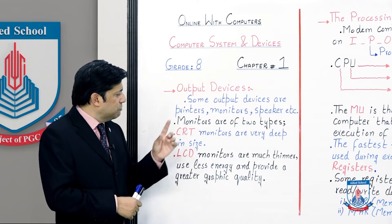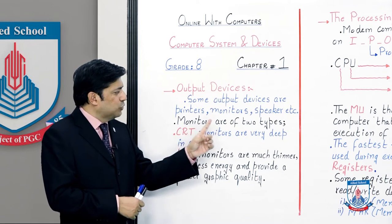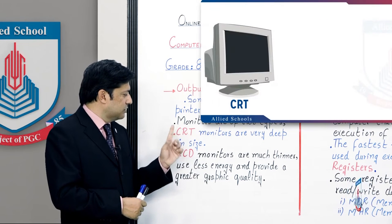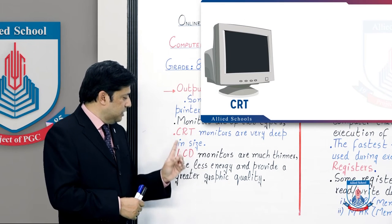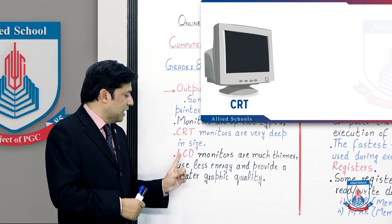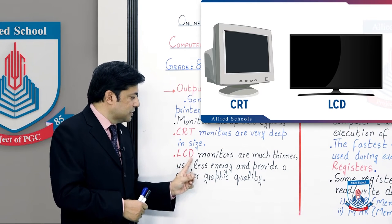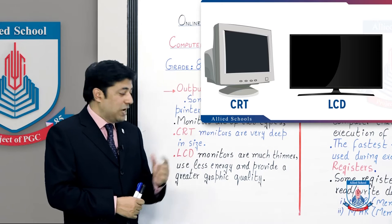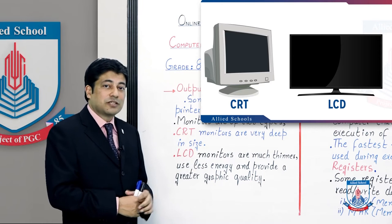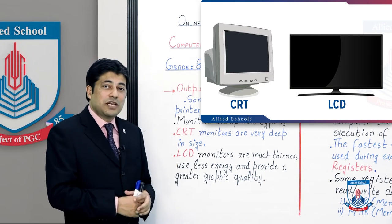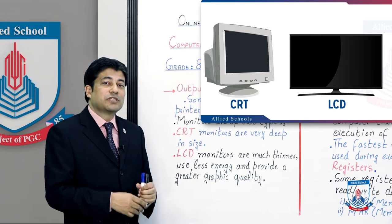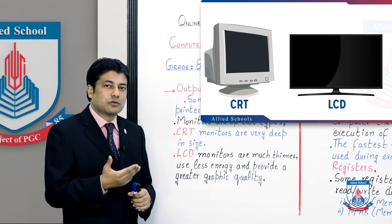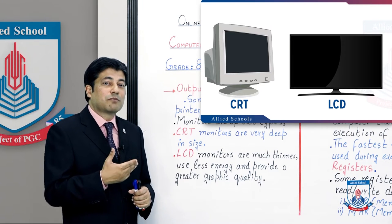Now we have two types of monitors. One is CRT monitors — Cathode Ray Tube monitors — and the second one is LCD, Liquid Crystal Display monitors. Currently we use LCD monitors. CRT monitors were used before, but now they are obsolete and not used.